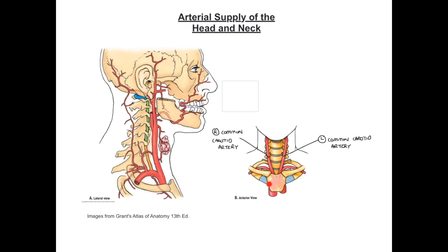These arteries essentially arise from the arch of the aorta. The left common carotid artery arises directly from the arch before running up the length of the neck, whereas the right common carotid artery arises from a structure called the brachiocephalic trunk. This is sometimes known as the brachiocephalic artery, and it is essentially the first branch from the arch of the aorta.